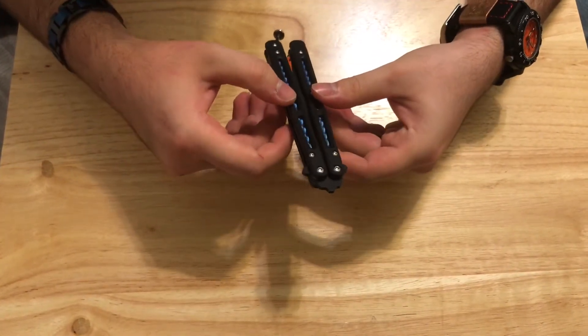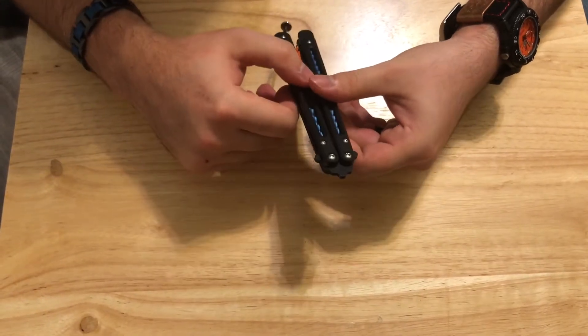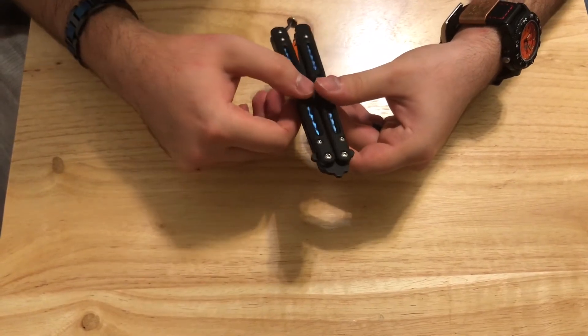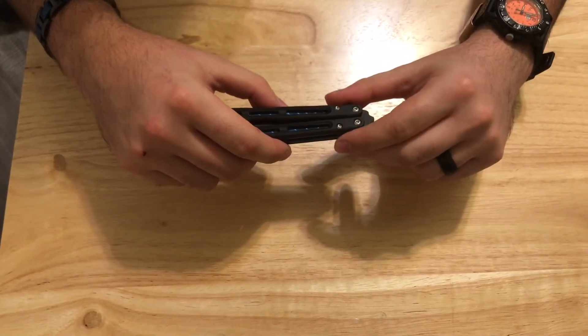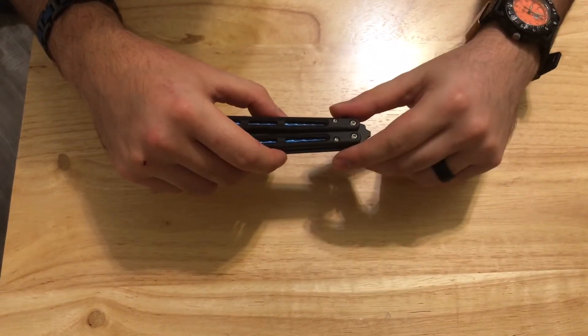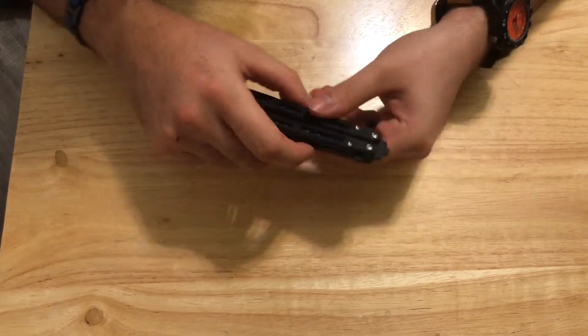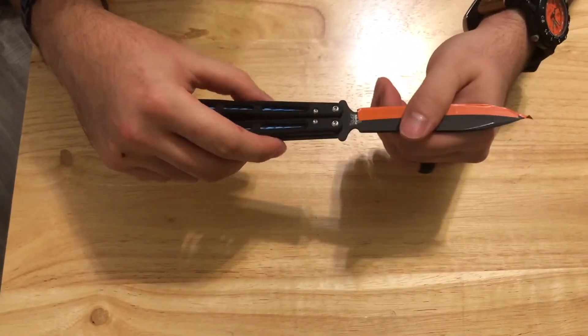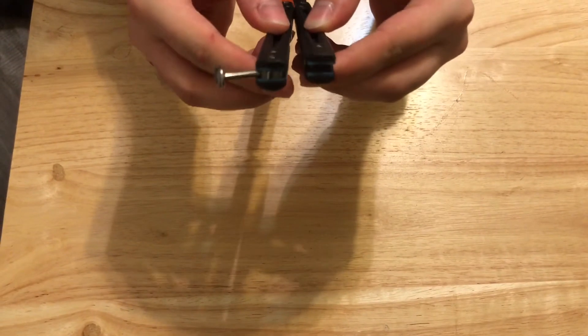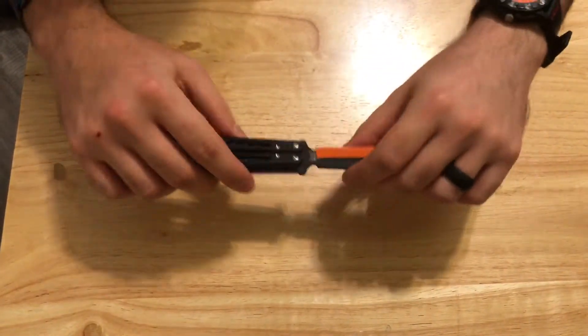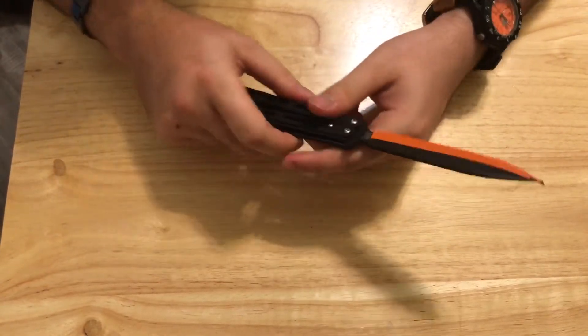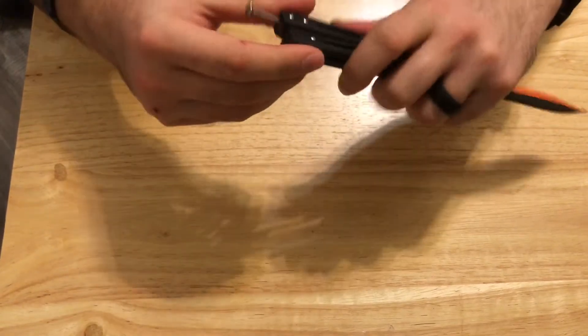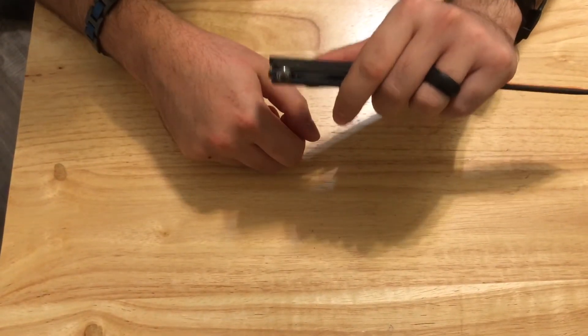A few things to note about the Benchmade 51: when you get the knife, you're going to want to Loctite the pivot screws. They are very loose and back out easily when you start flipping. Once you put blue Loctite in there, I've been flipping this very often for the past four days and it has not gotten loose at all. There's some play, but that's normal. It's probably breaking in because pushing the locking lever is smoother now than before.